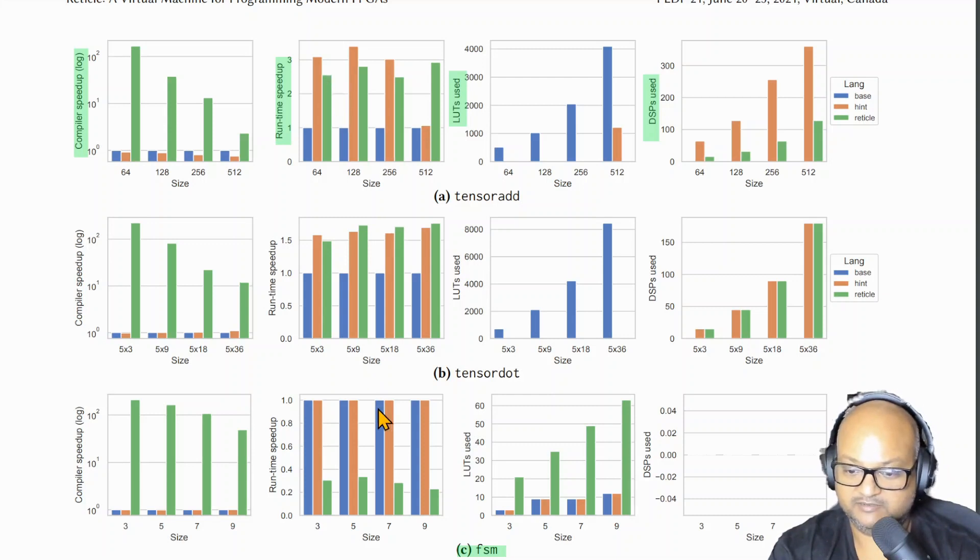The finite state machine benchmark is a bit of an outlier because it doesn't use any of the higher level DSP functionality on the FPGA at all, and that's where the vendor specific tool chain which highly optimizes the lookup tables wins out.